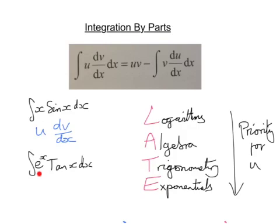In the second example, we have e to the x, which is an exponential, and we have tan x, which is trigonometry. Trig comes before exponentials, and so the trigonometry is the u, and the e to the x is dv by dx.